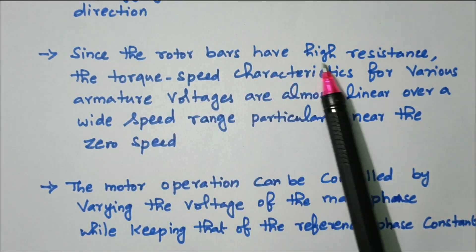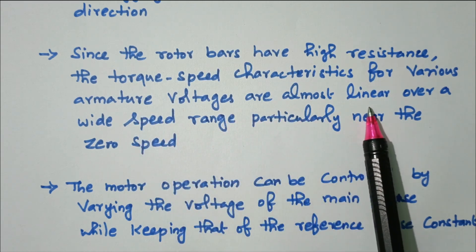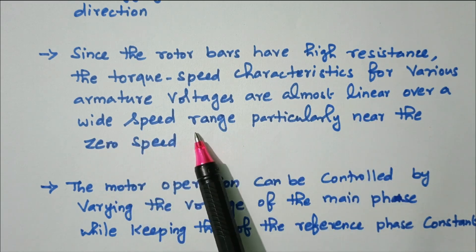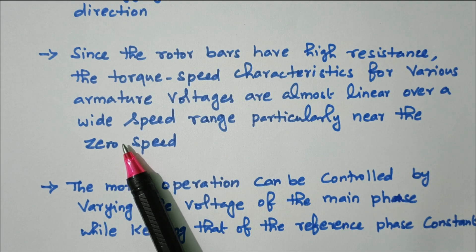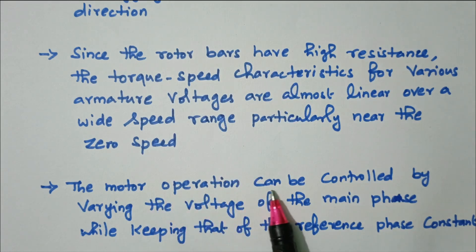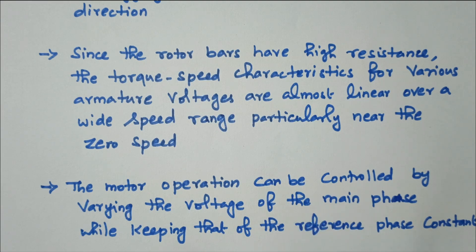Since the rotor bars have high resistance, the speed-torque characteristics for various armature voltages are almost linear with a negative slope over a wide speed range, particularly near zero speed. So when speed changes, torque also changes linearly. The motor operation can be controlled by varying the voltage of the main phase while keeping the reference phase voltage constant. That covers the two-phase AC servo motor.